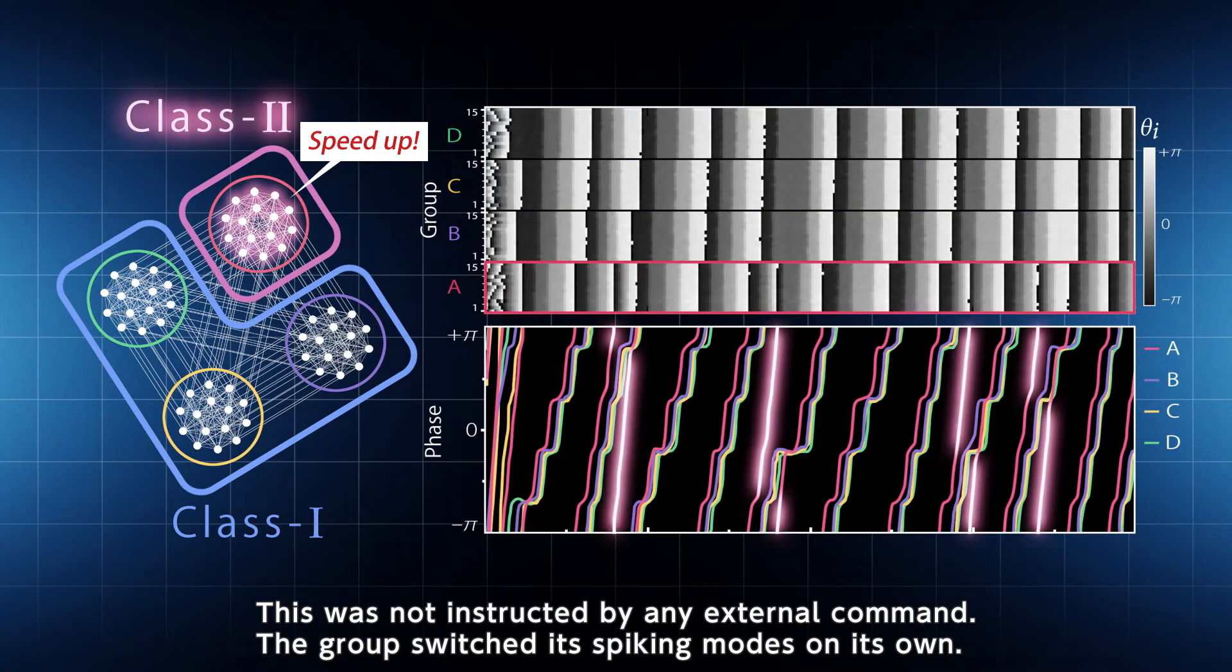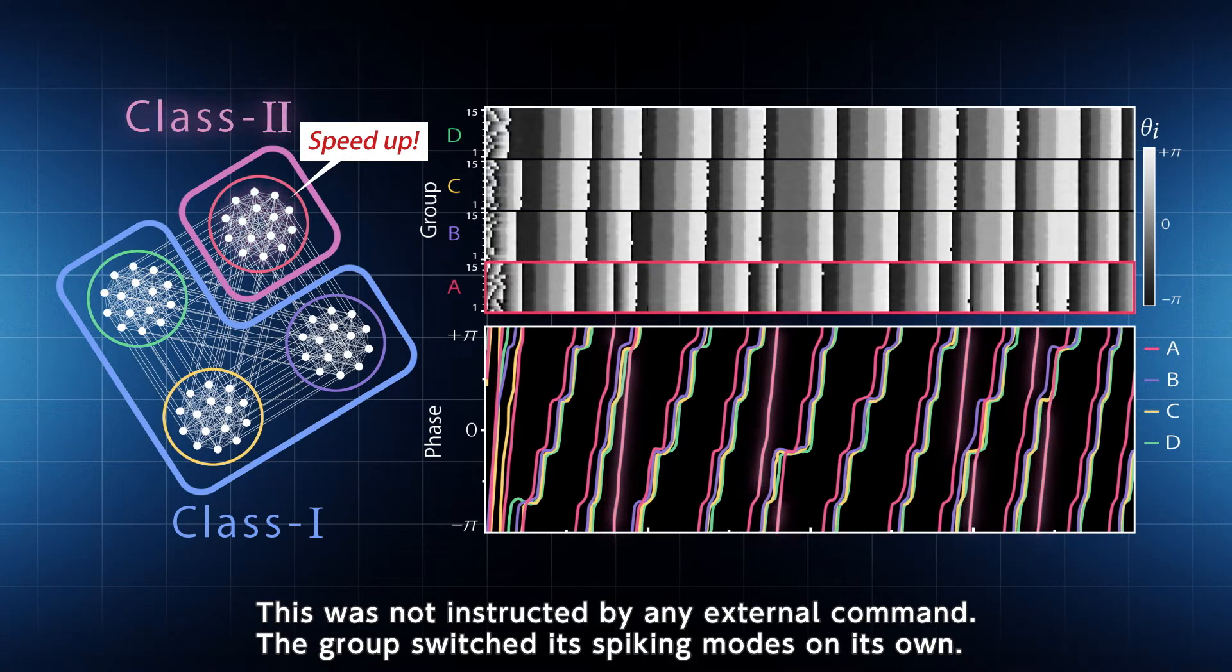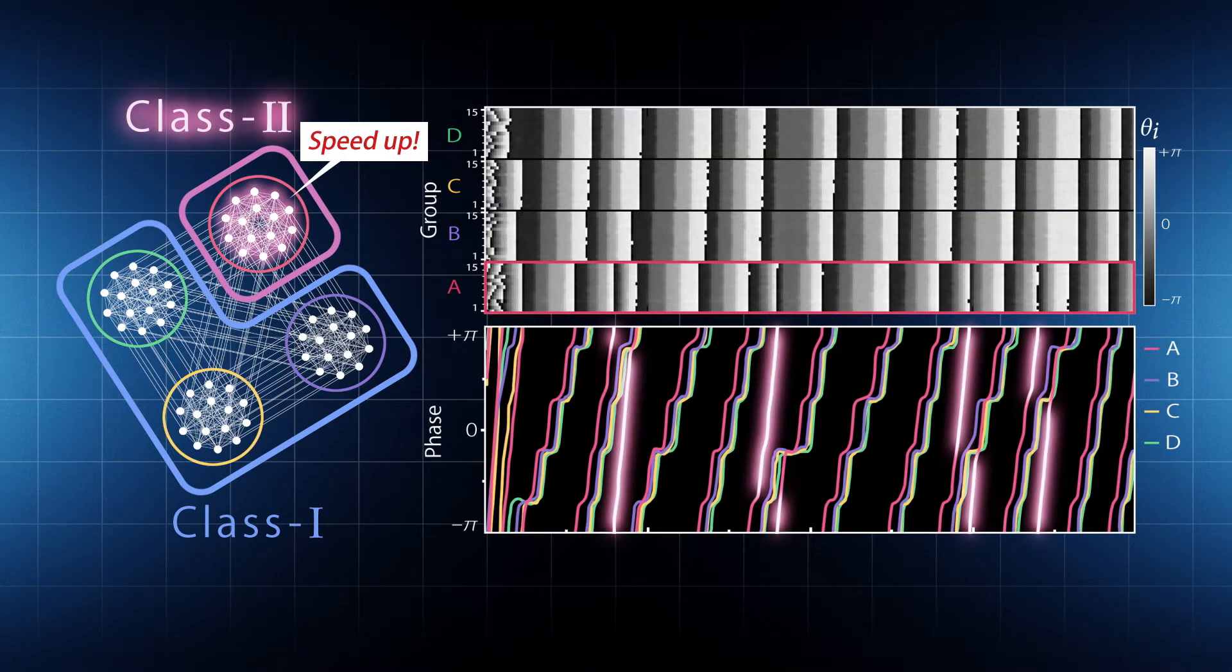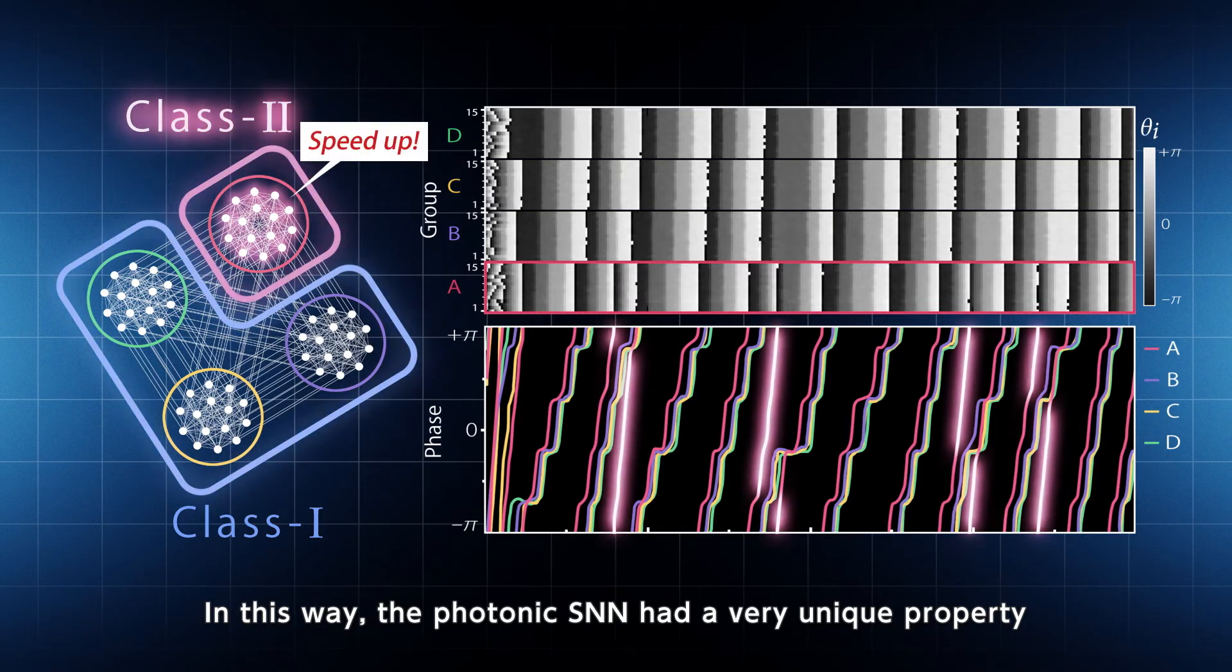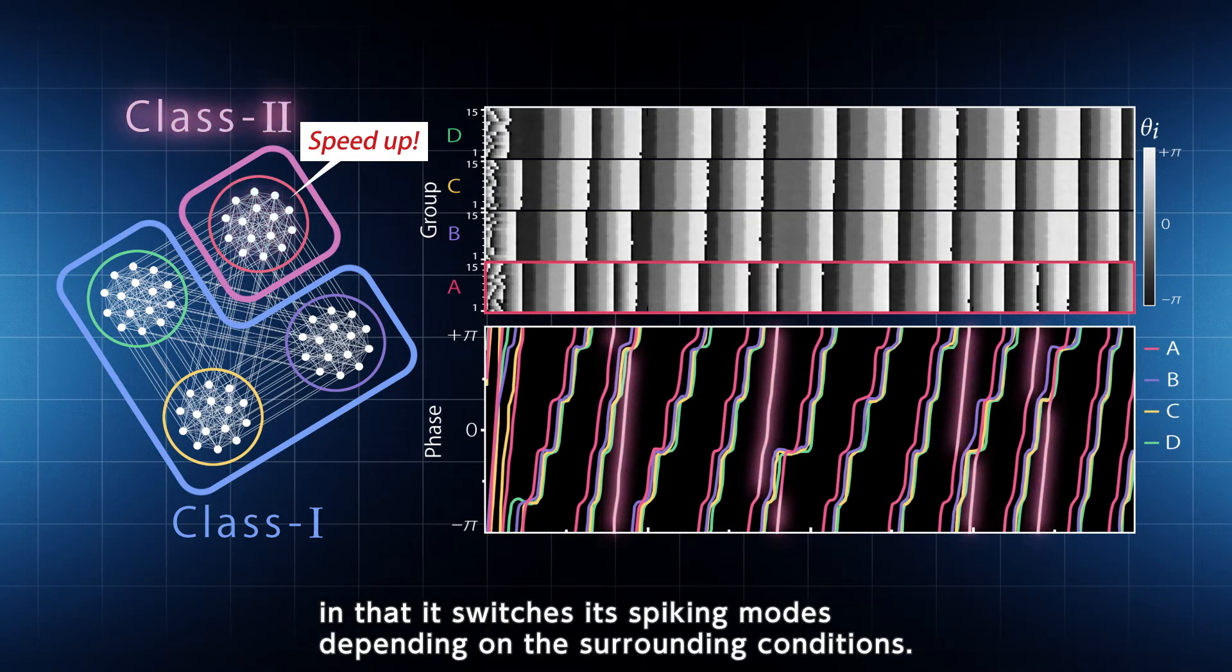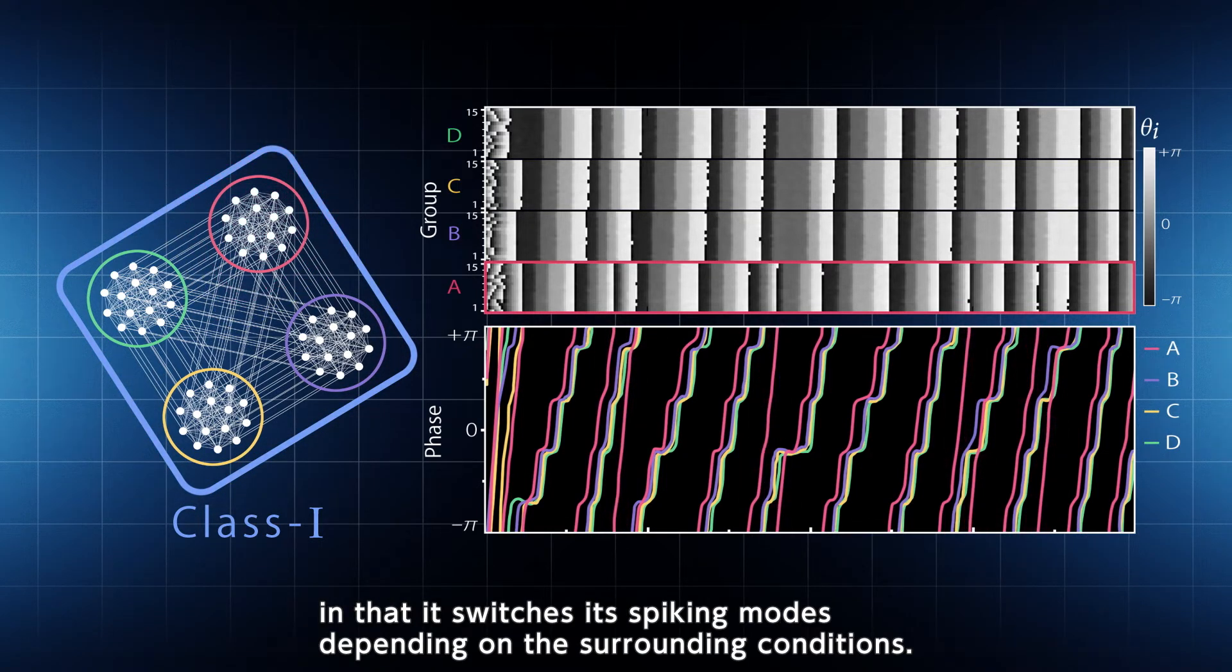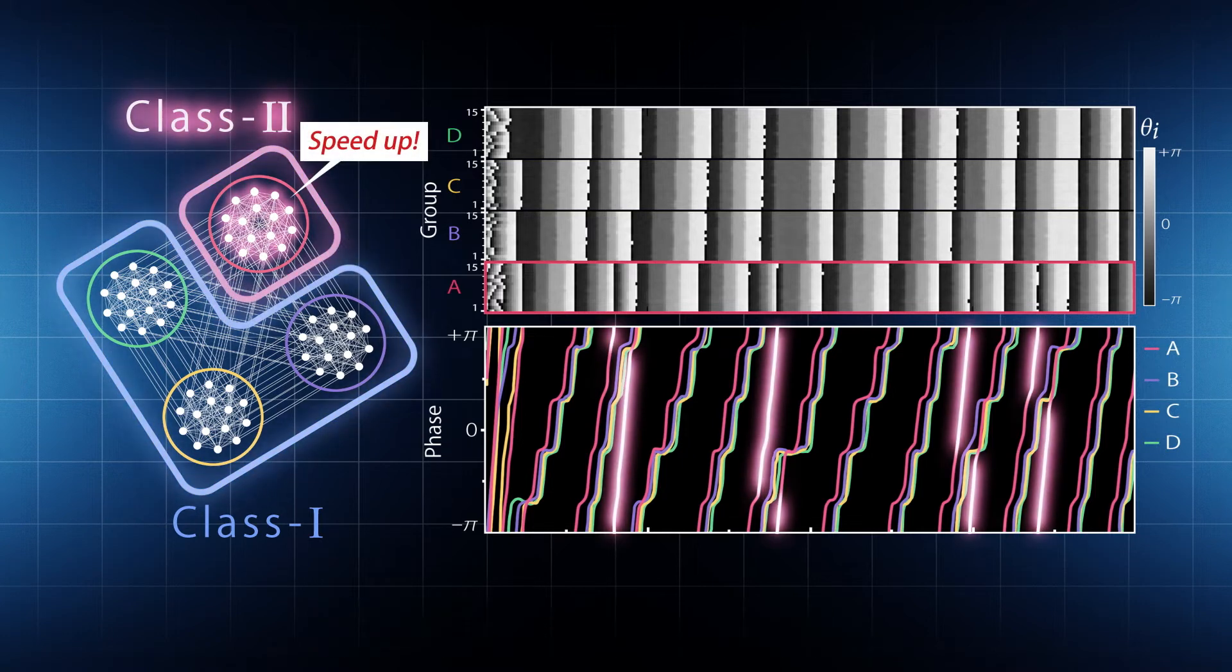This was not instructed by any external command. The group switched its spiking modes on its own. In this way, the photonic SNN had a very unique property in that it switches its spiking modes depending on the surrounding conditions.